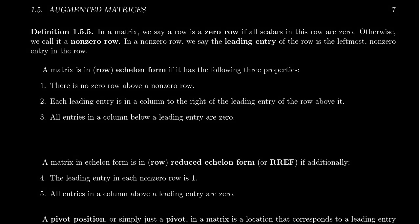At the end of section 1.5, we are going to introduce a little bit of vocabulary. We're going to talk about the echelon form of a matrix. So in a matrix, if you have a row in which every scalar is zero, we call that a zero row. We should clarify this with a formal definition.